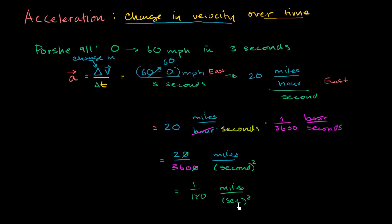And once again, this right here, when you have seconds squared in the bottom of your units, it doesn't make a ton of sense. But we can rewrite it like this up here. This is 1 over 180 miles per second. And then we divide by seconds again. Per second.